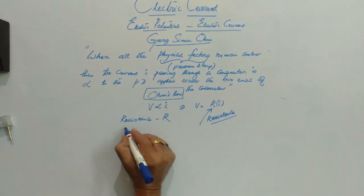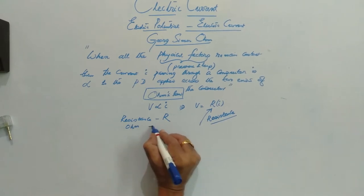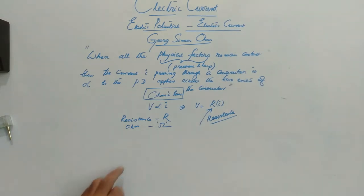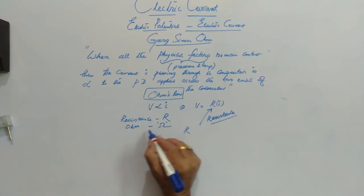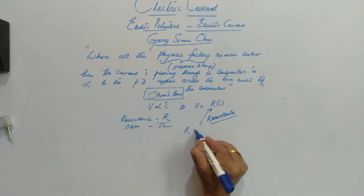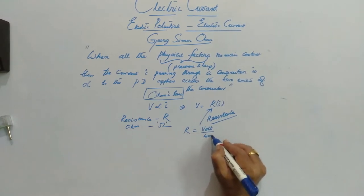R and it is measured in ohms. This is the symbol for ohm. SI unit of resistance is ohm, which is nothing but volt per ampere.